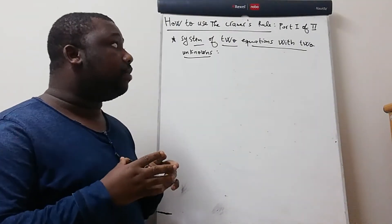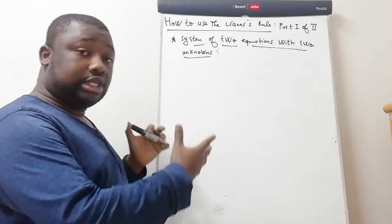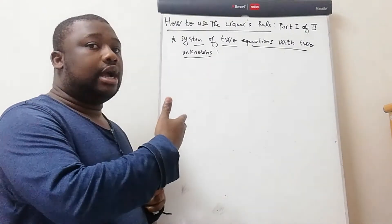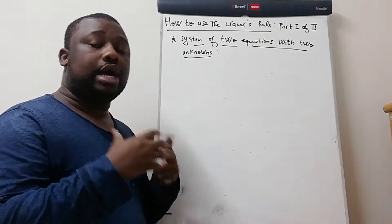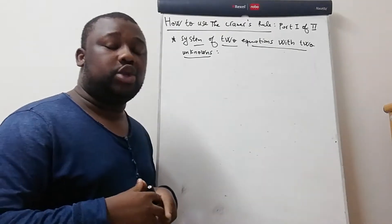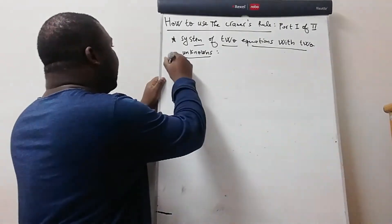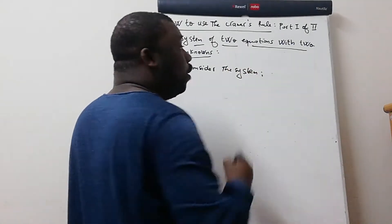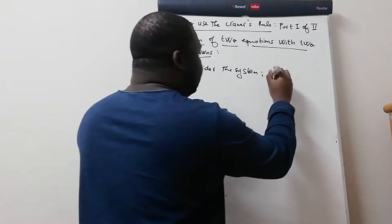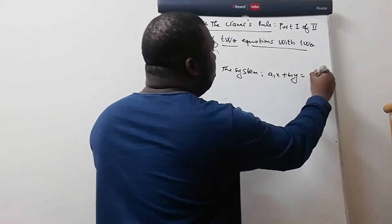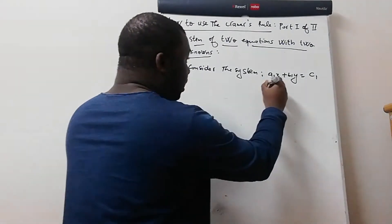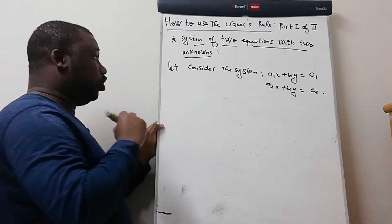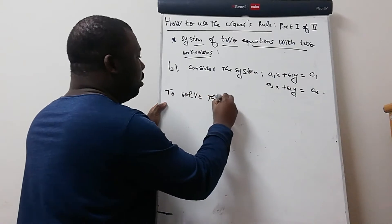I'm going to show you how to solve a system of two equations with two unknowns using Cramer's Rule. We'll first explain how to use the rule and then do calculations. Let's consider the system: a1·x + b1·y = c1 as the first equation, and a2·x + b2·y = c2 as the second equation. Now, to solve this system using Cramer's Rule, we follow the steps below.